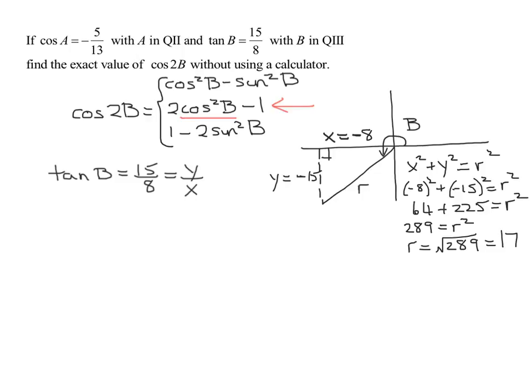So now the reason I did this was so I could find the cosine of B. So looking at this picture, the cosine of B is x over r. So the cosine of B is going to equal x, remember, is negative 8. And we just found r was 17.